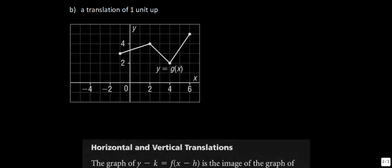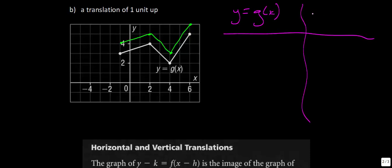Part B says a translation of 1 unit up. Very quickly, I'll take each point and move it 1 unit up, connect the dots, and you have a graph that looks like this. For the new function, we write y minus 1 equals g of x. Some of you might have thought y equals g of x plus 1, and those are actually the same thing. In this unit, the format we use is writing the vertical translation out in front, so this minus 1 actually means the graph has gone up 1.